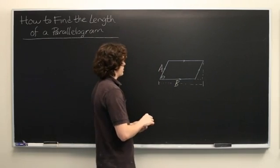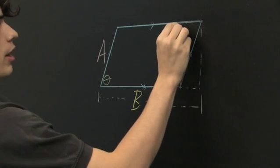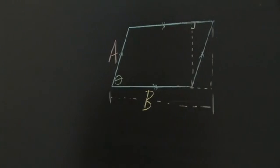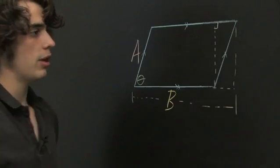Well, it's helpful to drop down a height from right here, so this forms a right angle with the top. And we can think of this sliver right here as being a right triangle.